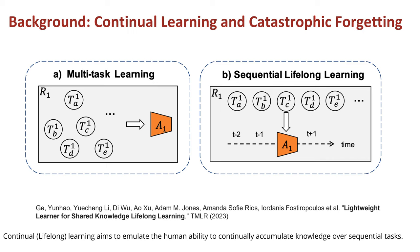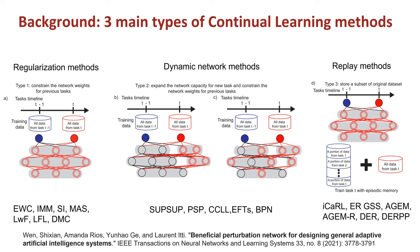The primary focus of our paper is to address the issue of catastrophic forgetting in Continual Learning. One of the key distinctions between Continual Learning and Multitask Learning is data accessibility. In Multitask Learning, all datasets are accessible simultaneously, whereas in Continual Learning, only one dataset is available at a time, and previous datasets become inaccessible.